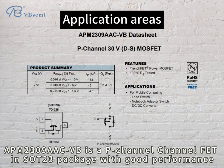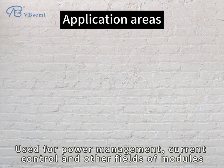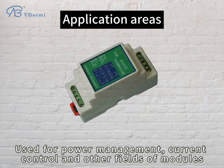The APM2309A ACVB is a P-Channel FET in a SOT23 package with good performance. It is used for power management, current control, and other fields of modules.